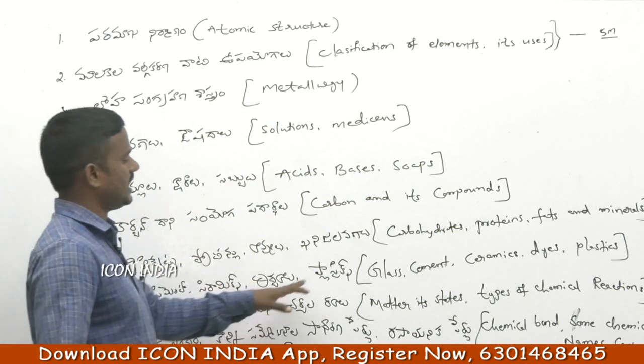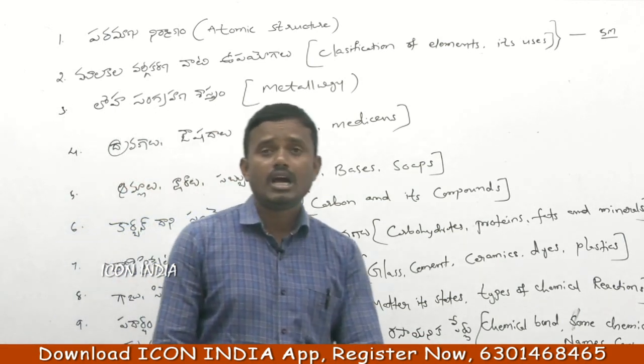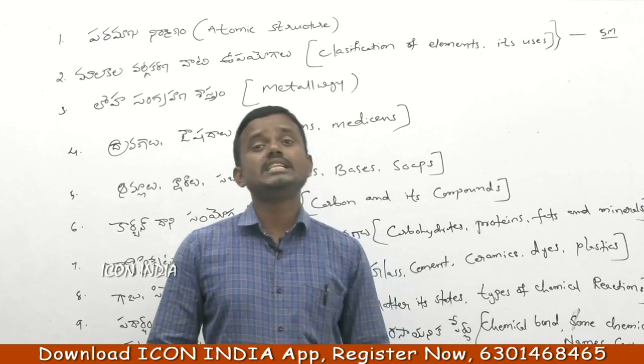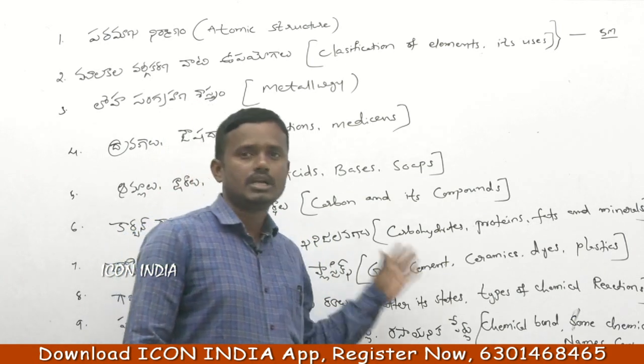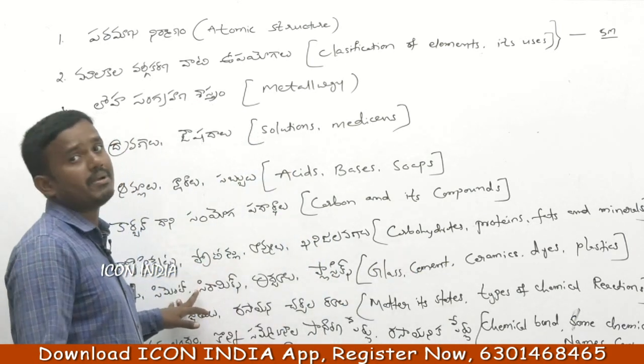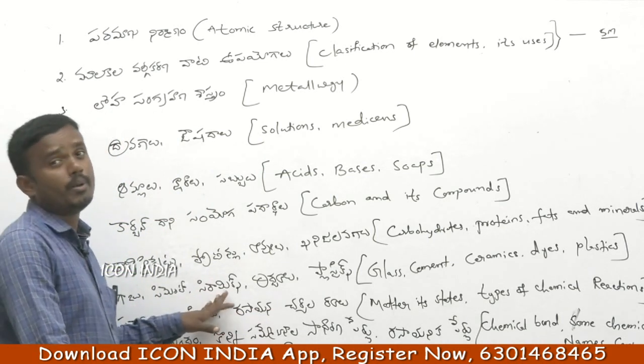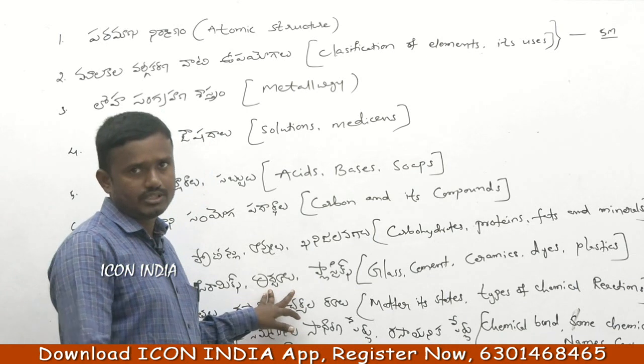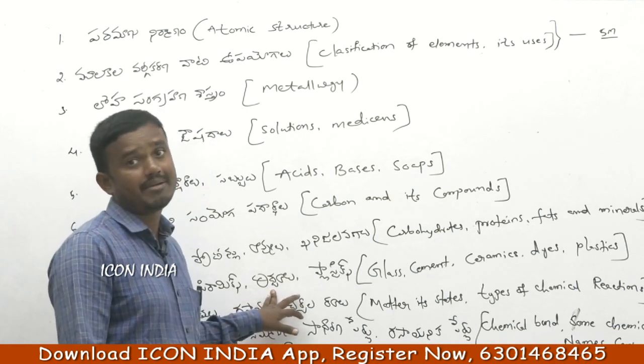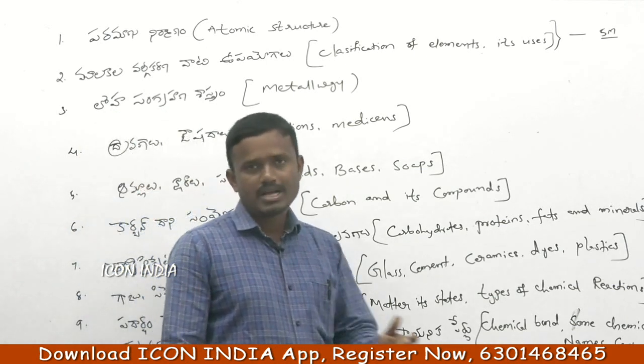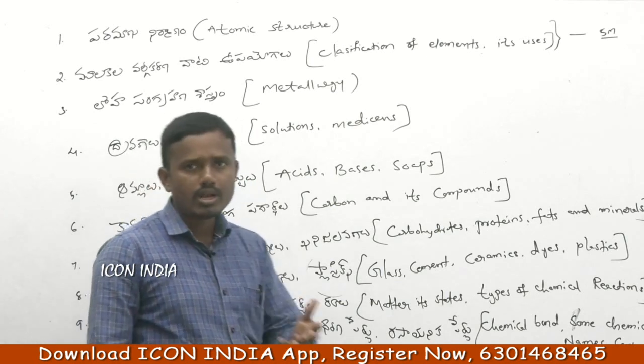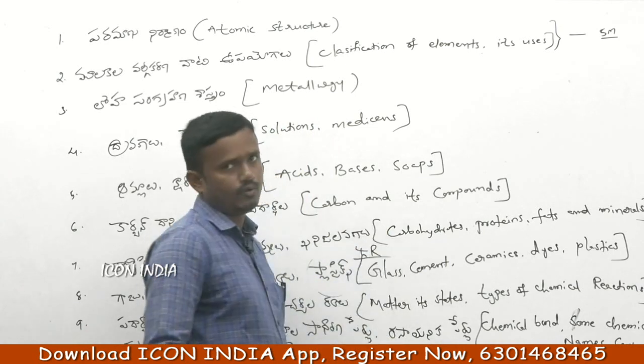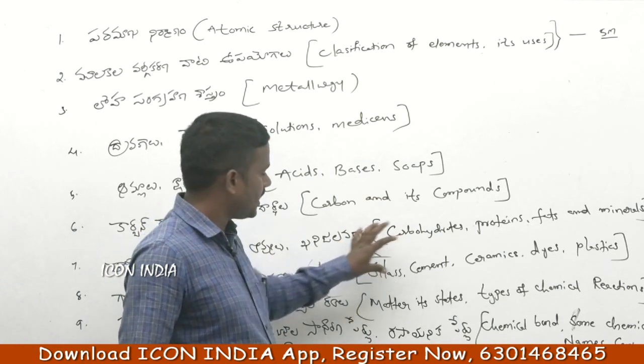For glass, cement, ceramics, and plastics: glass has different types, cement involves chemical combinations, ceramics use raw materials, dyes are chemicals for coloring hair and skin, and plastics include PVC, polyethylene, and polystyrene.